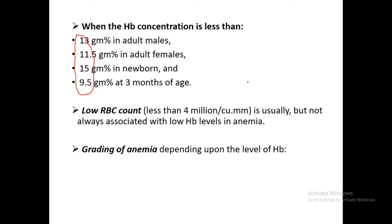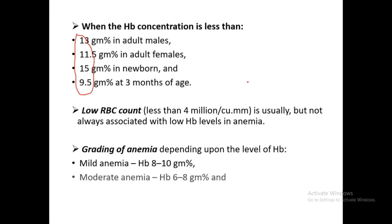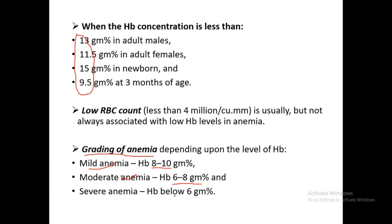Grading of anemia is based on hemoglobin level. Mild anemia: hemoglobin 8–10 g%. Moderate anemia: hemoglobin 6–8 g%. Severe anemia: hemoglobin below 6 g%.